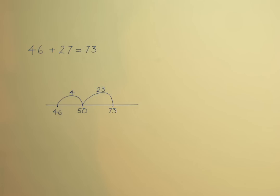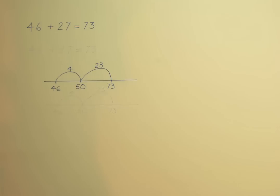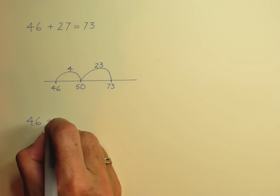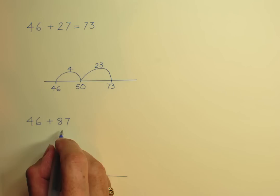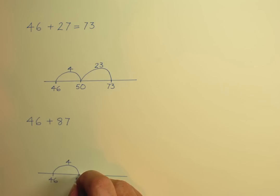Here's an example where I would want to use three jumps. If we change the question to 46 plus 87, we now have a problem that would require carrying in both columns if we were solving it as a column addition. On an empty number line it goes like this. First we bridge through the next multiple of 10 and then through the next 100. After adding 4, I know there's still 83 to add. I'll add 50 of it in one go to bridge 100, which leaves 33 still to add.